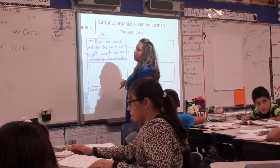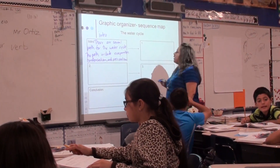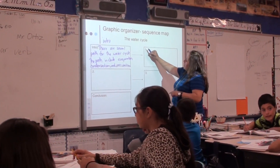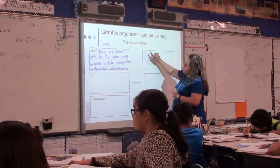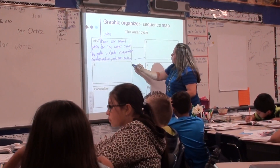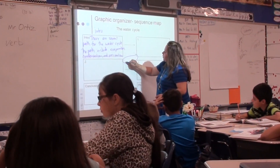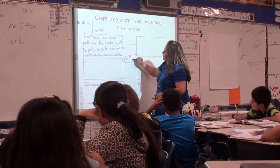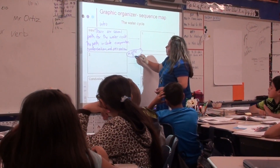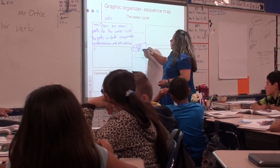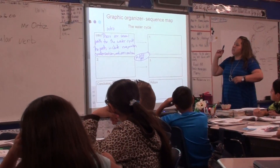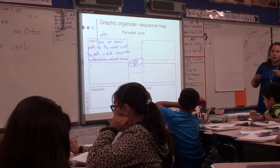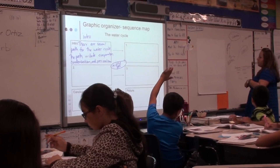Boxes one, two, and three are going to be part of your middle paragraph. So what is the first step of the water cycle? Let me pick volunteers.